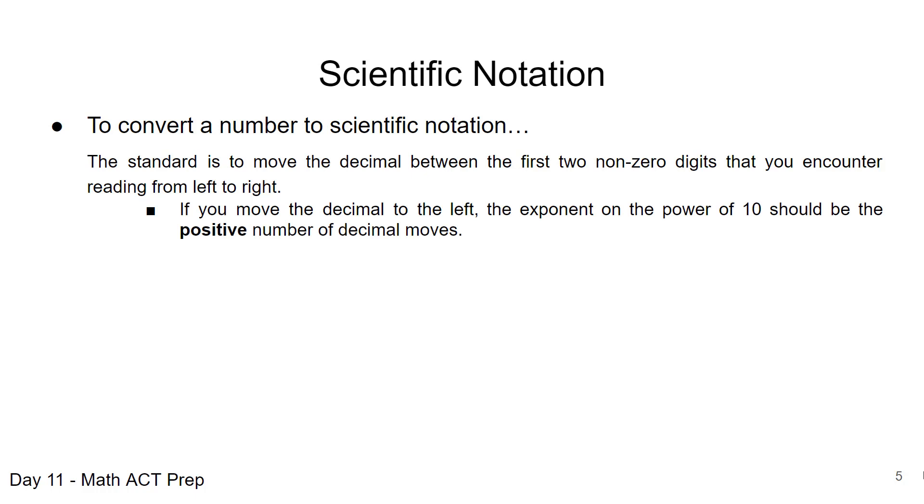If you have to move the decimal point to the left, the exponent on the power of 10 should be the positive number of decimal moves. Now this is where it gets a little tricky, am I moving left or right, and sometimes I have to think about it. This is where it comes into the thing of I'm using a positive exponent when I have a really big number. So I've had to move the decimal to the left.